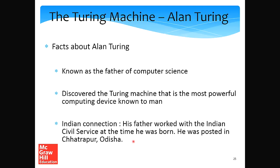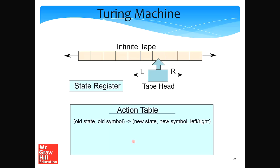How do we build a universal machine that can compute results for all kinds of programs? The answer is attributed to Alan Turing, the father of computer science, who discovered the Turing machine — the most powerful computing machine known to man. Interestingly, Alan Turing's father worked with the Indian civil service at the time he was born. The Turing machine is a theoretical device, but theoretically it can compute the results of almost all programs we are interested in writing.